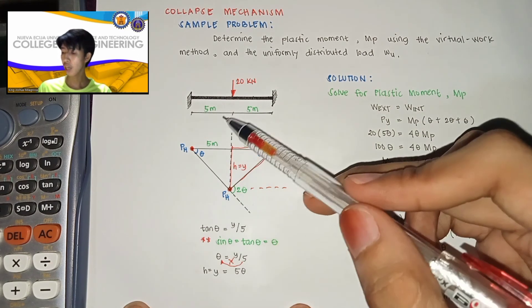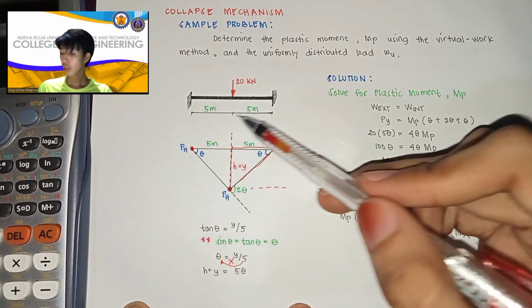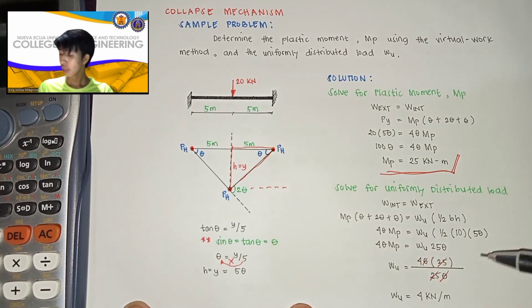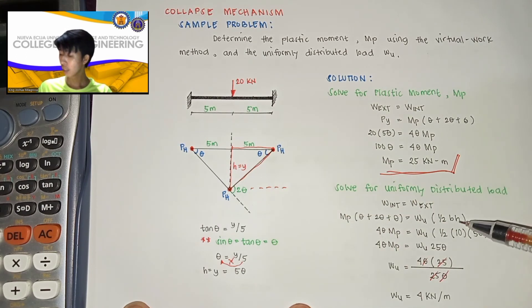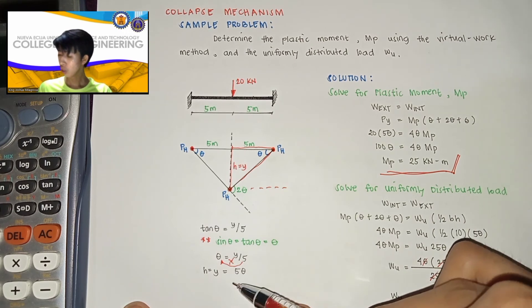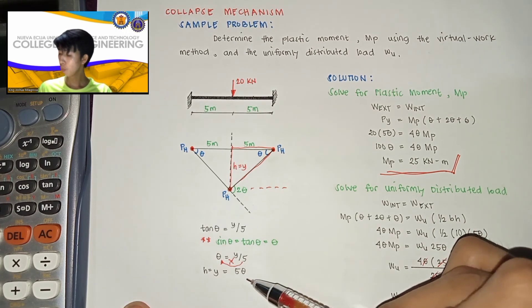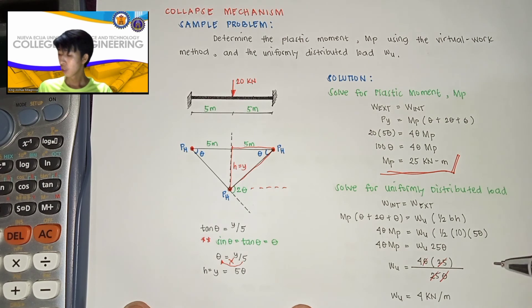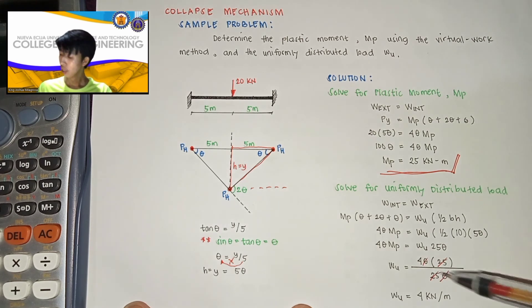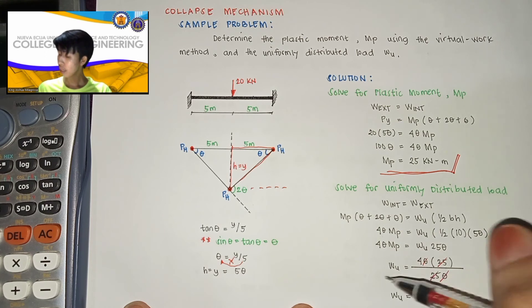which is 5 meter, I'm sorry, it's 10 meter, which is 5 plus 5, then multiply natin sa height, which is equal dun sa 5 theta, na nakumpute natin kanina. So pag sinod natin yan,